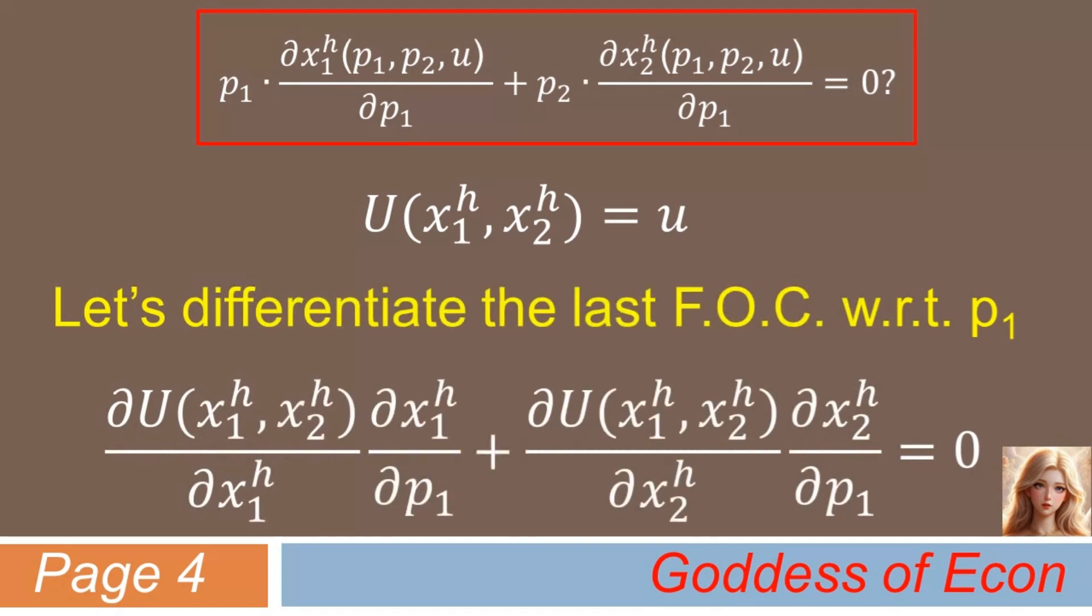Then we have ∂u/∂x_1^h times ∂x_1^h/∂P1, plus ∂u/∂x_2^h times ∂x_2^h/∂P1, equals 0.